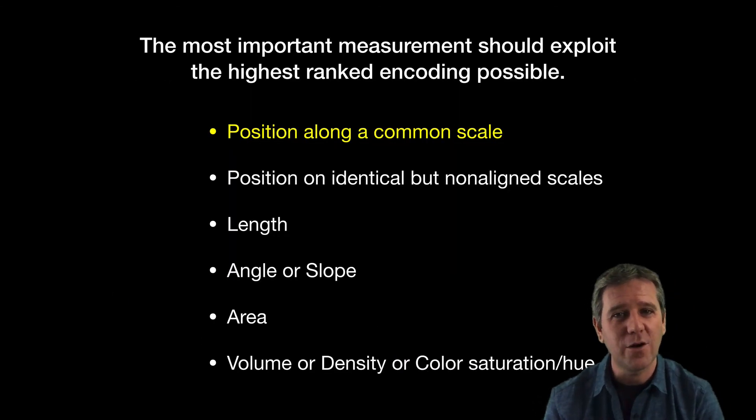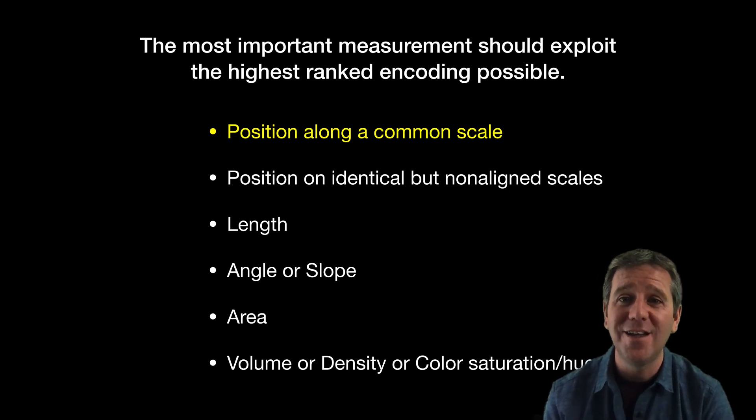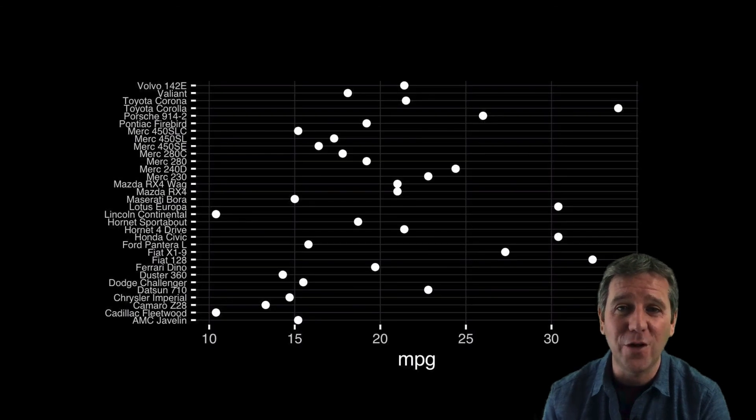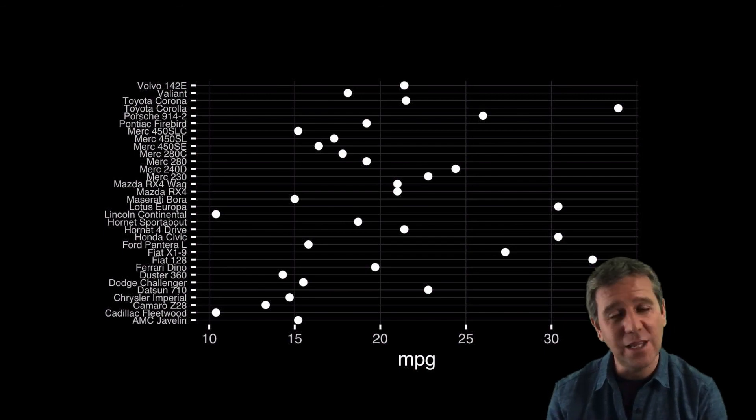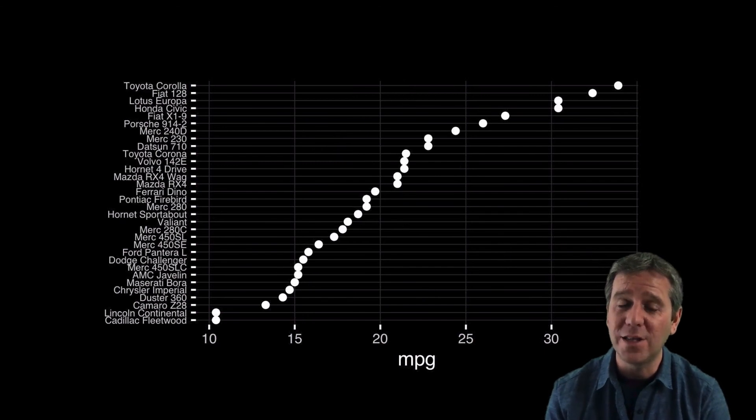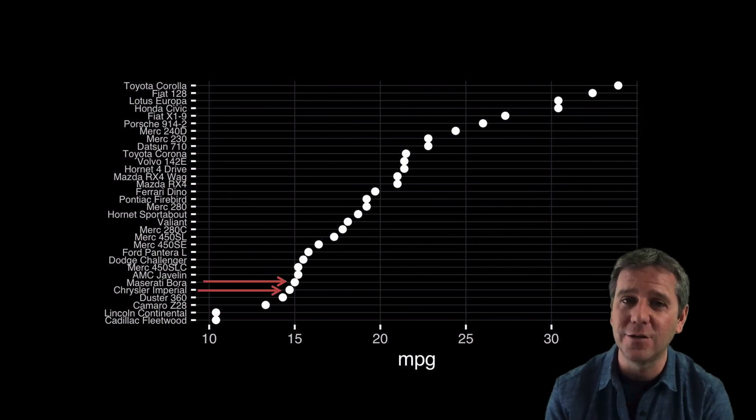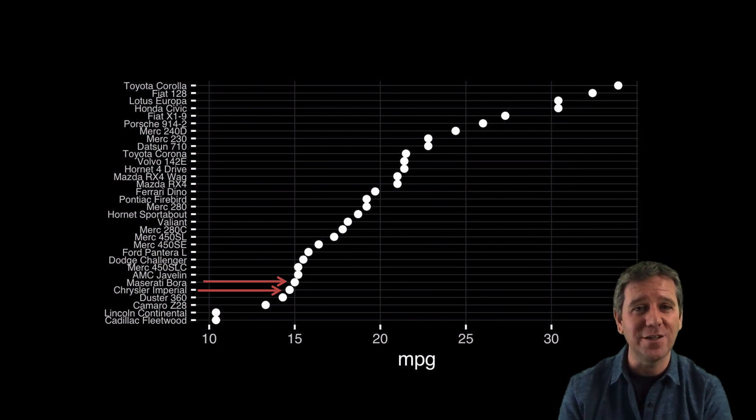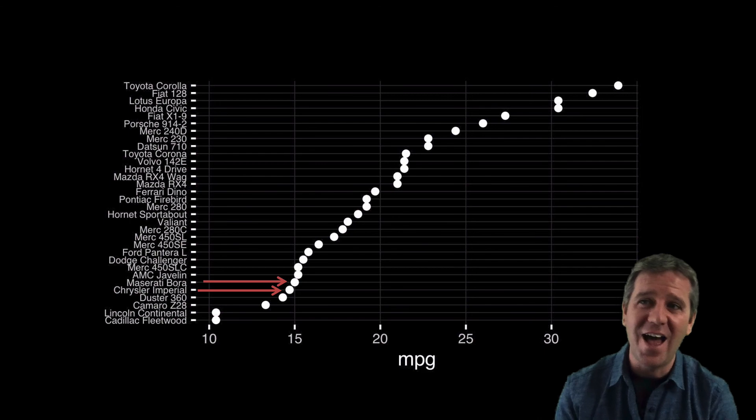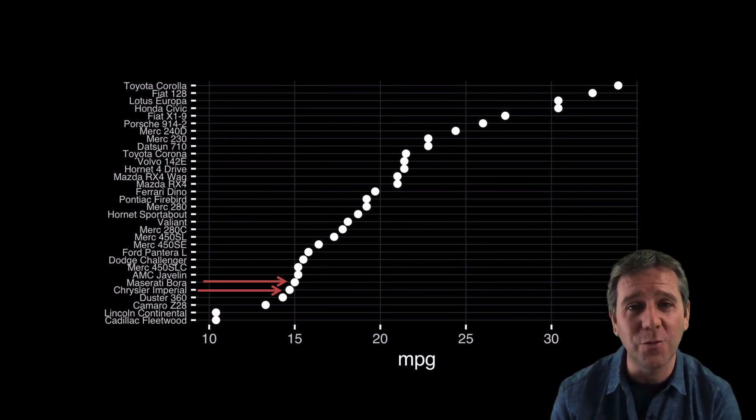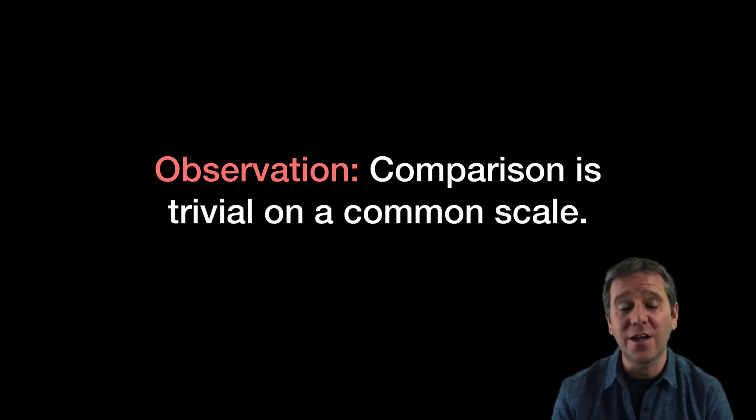We've arrived at the top of this list and we're going to make use of the highest ranked entry: position along a common scale. A side note: all the things we've learned, like alphabetical ordering being a mistake, still hold. We order by the trend to bring out the pattern—ordering by miles per gallon rather than the default alphabetical ordering. Now for the first time we can see differences where we couldn't before, like between this Maserati and this Chrysler. Comparison is trivial on common scales.